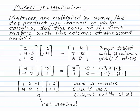You multiply matrices by using the dot product that you learned for vectors in calculus. You dot the rows of the first matrix with the columns of the second matrix.